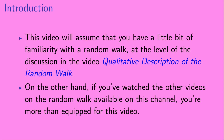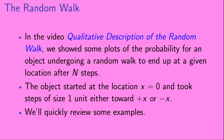This video will assume that you have a little bit of familiarity with a random walk at the level of the discussion in the video 'Qualitative Description of the Random Walk.' On the other hand, if you've watched the other videos on the random walk available on this channel, you're more than equipped for this video. In the video qualitative description of the random walk, we showed some plots of the probability for an object undergoing a random walk to end up at a given location after n steps. The object started at the location x equals 0 and took steps of size 1 unit either toward plus x or toward minus x.